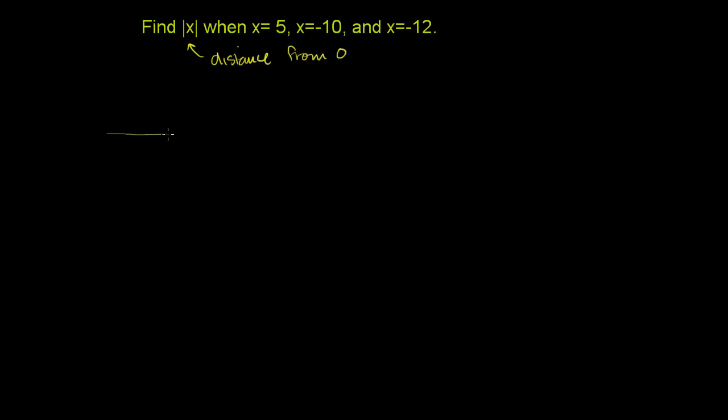So let me just draw a fast number line over here. If I were to first, let's just put 0 right over here, since we're thinking about the distance from 0. So let's just think about the absolute value of x when x is equal to 5. So that's equivalent to the absolute value of 5. We just substituted 5 for x. The absolute value of 5 is the distance of 5 from 0. So you go 1, 2, 3, 4, 5. 5 is exactly 5 to the right of 0. So the absolute value of 5 is just 5.